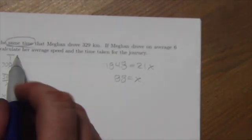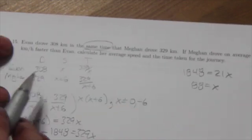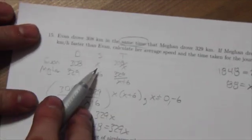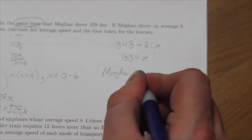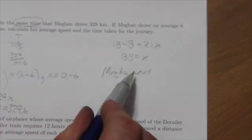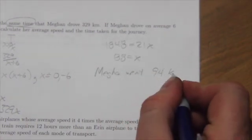So the question is calculate her average speed and the time taken for the journey. Now remember X, X was Evan's speed. So Megan went six kilometers an hour faster. So Megan went 94 kilometers per hour.